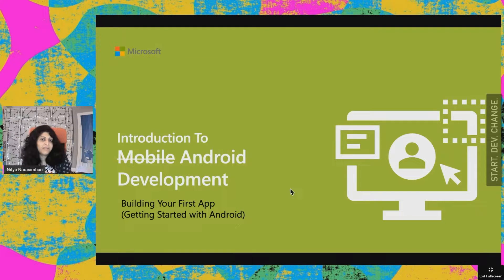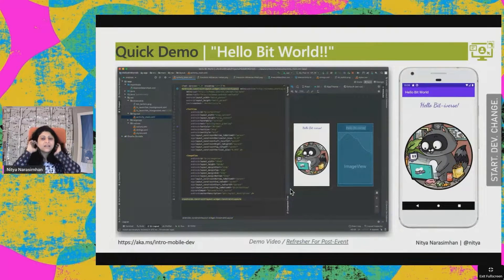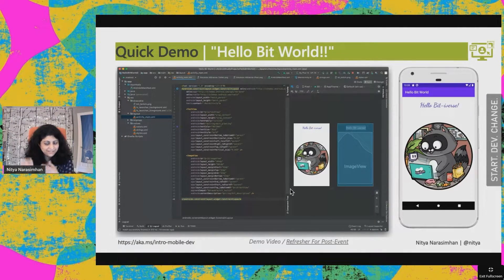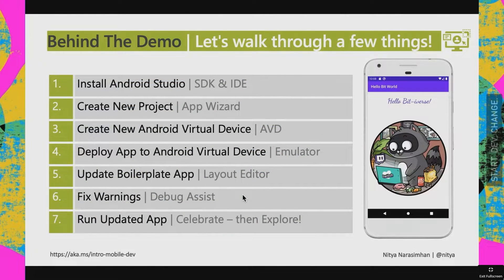Over the next ten minutes or so, I'm going to walk you through a speed review of building your very first simple Android app. What we want to build is a single screen app that shows Hello World with the Bit icon — an image from Ashley McNamara featuring our developer advocate Bit. What you see on the left is Android Studio, which is the preferred IDE.